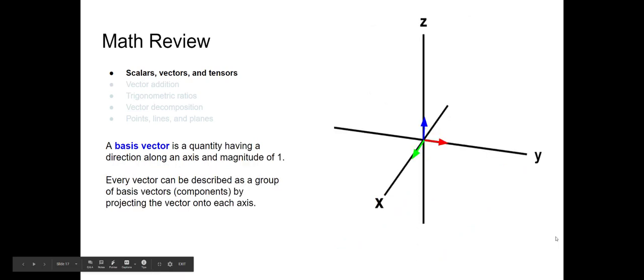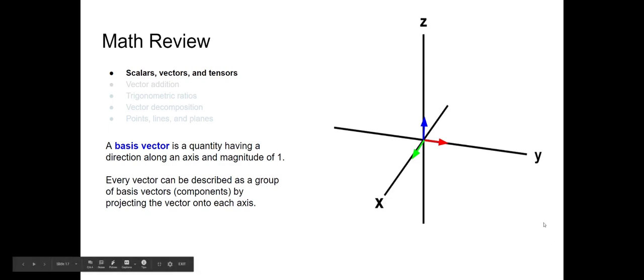A basis vector is a vector that has a direction along an axis and a magnitude of one. This red vector is a basis vector of length one along the y-axis; the blue vector is a basis vector of length one along the z-axis; and the green vector is a basis vector of length one along the x-axis. A unit vector has a length of one; a basis vector is a unit vector that follows an axis. Every vector can be described as a group of basis vectors by projecting the vector onto each axis.